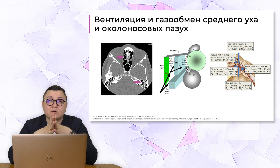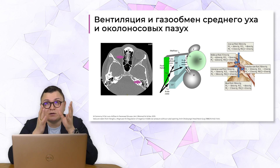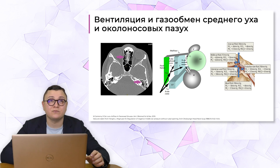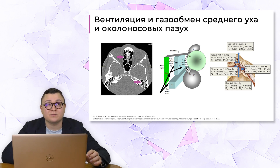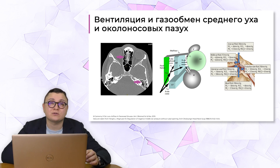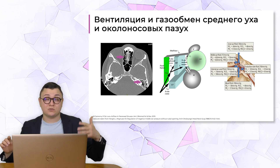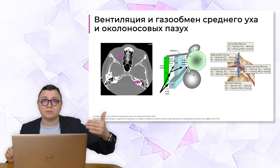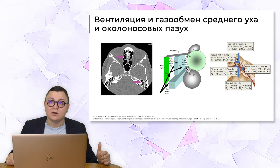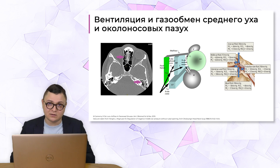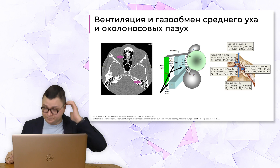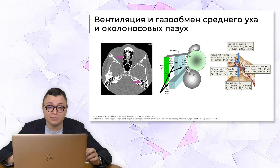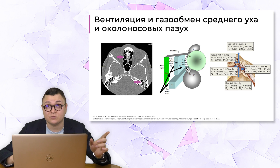Похожий слайд я показывал на первом вебинаре, посвящённом острым риносинуситам, и для барабанной полости он также правомочен. В околоносовых пазухах нормальная среда – это воздух, они выделены чёрным цветом. Видно клетки решётчатого лабиринта, клиновидную пазуху, и мы видим височную кость, которая также заполнена чёрным цветом. В норме в околоносовых пазухах и в барабанной полости находится воздух, и там непрерывно происходит газообмен. Есть интересные работы, которые показывают, как изменяются концентрации кислорода, углекислого газа, NO2, оксида азота в слизистой оболочке околоносовых пазух и барабанной полости.